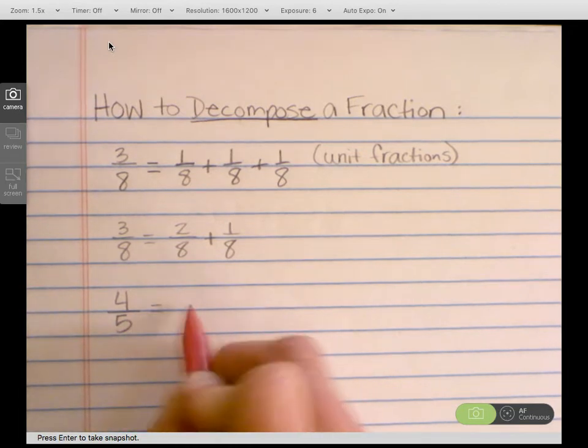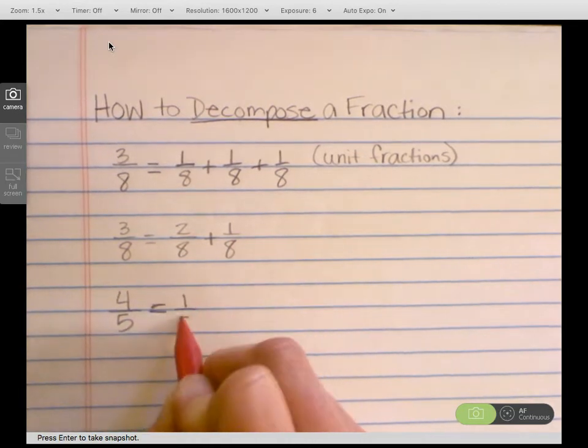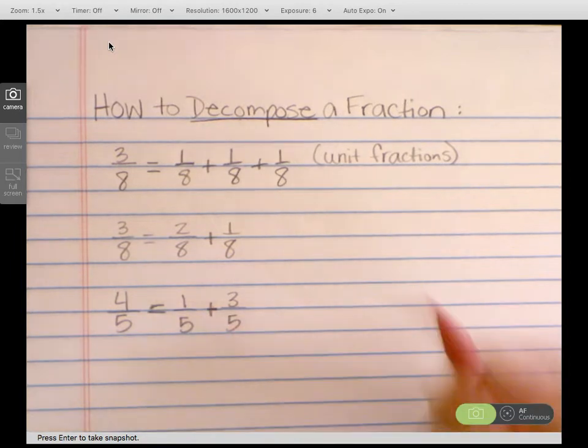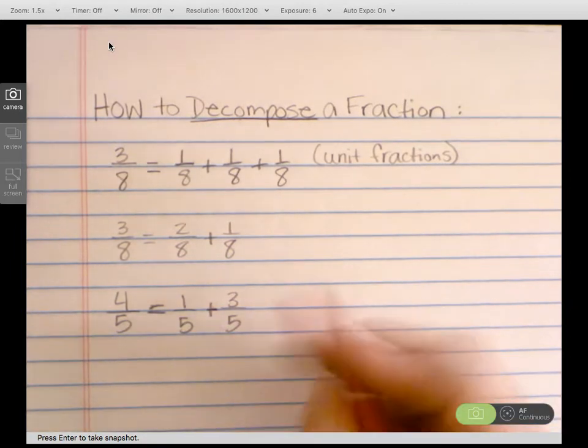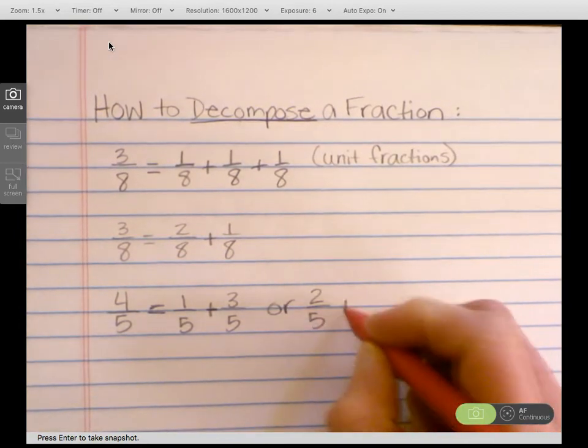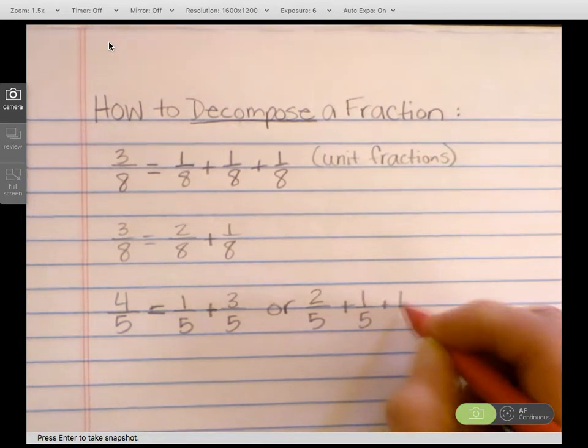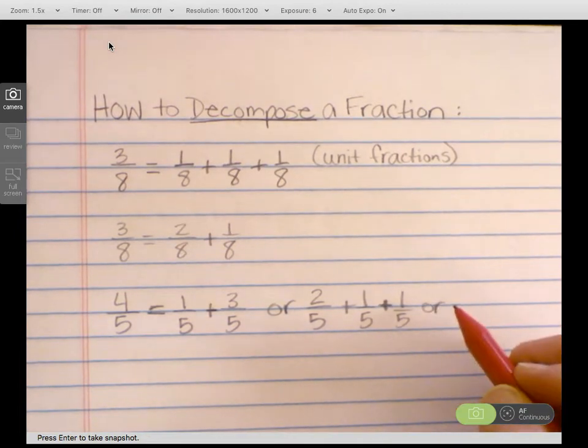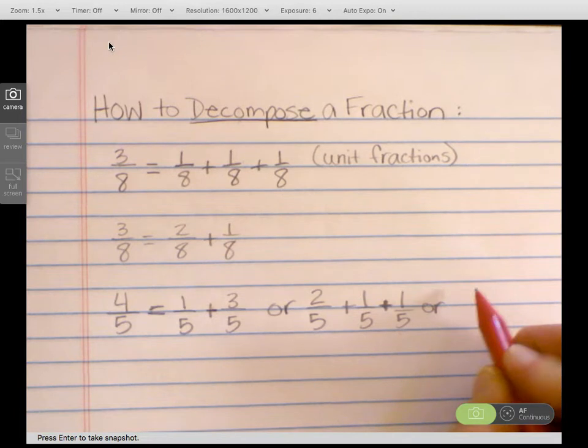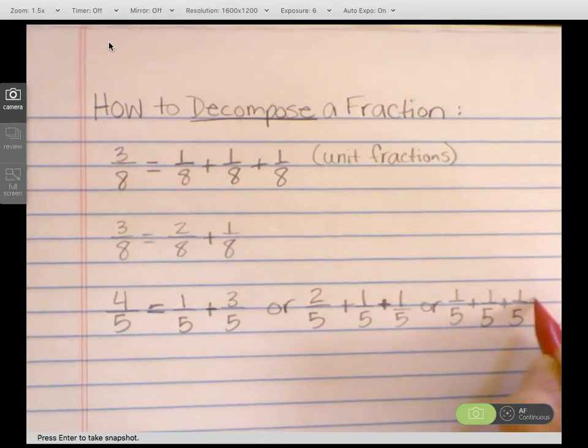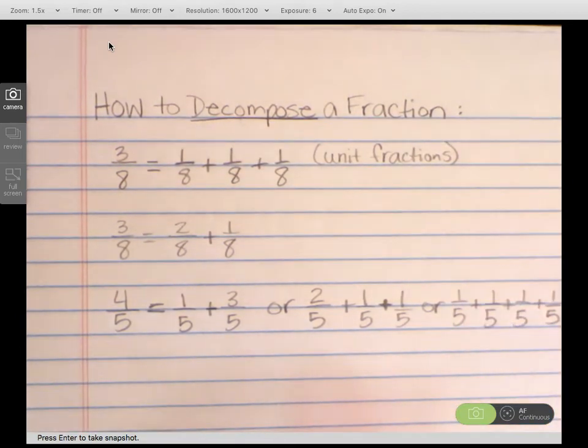One way to do that is to have 1 fifth plus 3 fifths. 1 plus 3 is 4. Or you could have 2 fifths plus 1 fifth plus 1 fifth. Or another way, you could use unit fractions: 1 fifth, 1 fifth, 1 fifth, 1 fifth plus another 1 fifth. So each of these shows 4 fifths different ways.